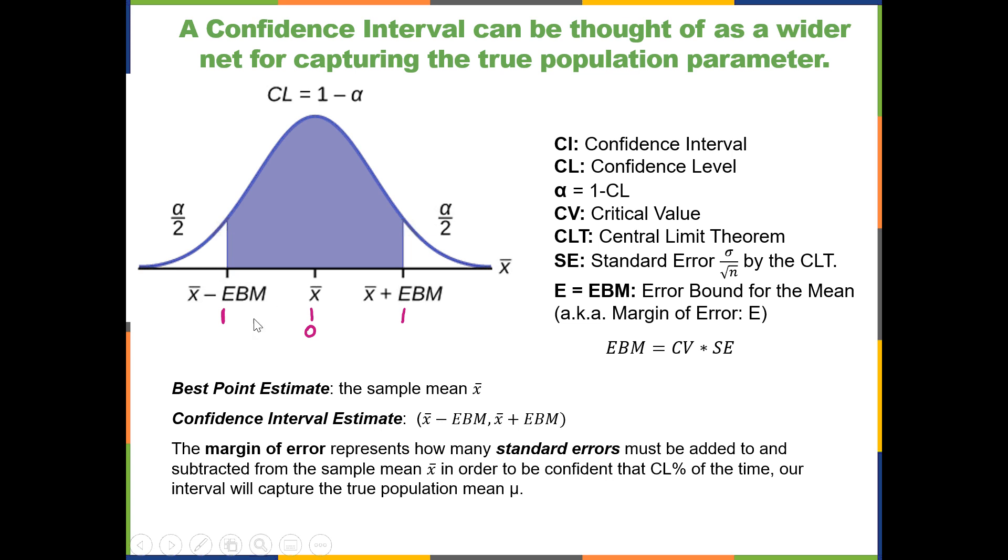And the tail areas and the area in between help us figure out what our critical values will be, and the critical values will be either z-scores or t-scores. You can have a correspondence between the boundaries of your confidence interval and the critical values on that z-scale or t-scale, as the case may be.